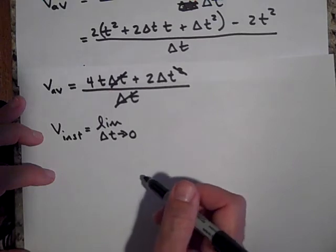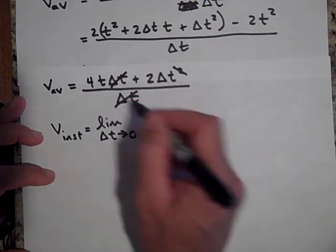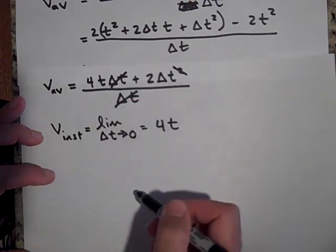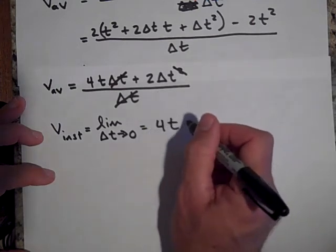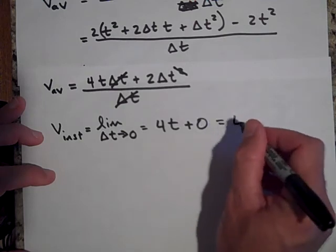As delta t approaches zero. So if we let delta t approach zero, then what we get is we're going to get 4t plus, as that goes to zero, that term is going to go to zero. So that's 4t.